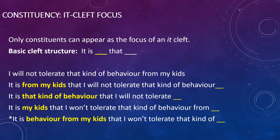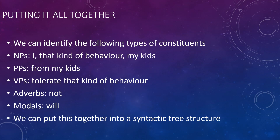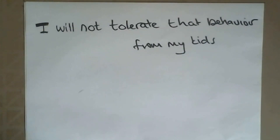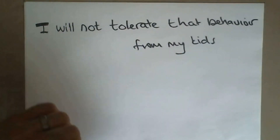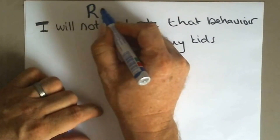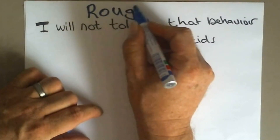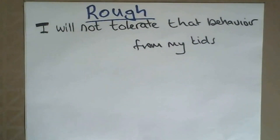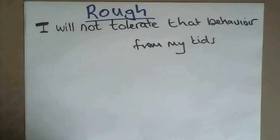So now we can identify the following types of constituents: noun phrases, prepositional phrases, verb phrases, and adverbs — and you'll also know how to identify a number of these from your tutorial. We can draw all of this together by drawing a syntactic tree of the sentence we've been discussing. Let's pull this together by looking at 'I will not tolerate that behavior from my kids.' Always start off with a piece of rough work — never try to draw a tree directly from scratch, because it puts a lot of pressure on you and it's really not necessary.